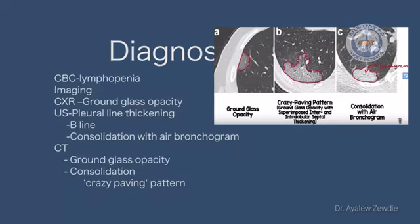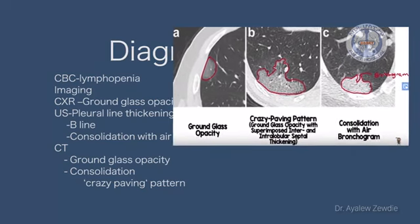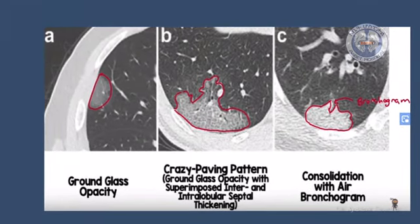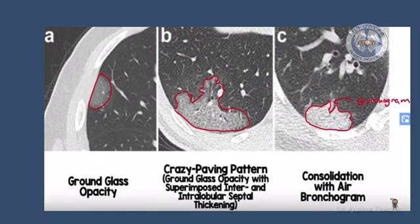CT is currently recommended for patients with COVID-19. Ground-glass opacity, consolidation, and a special characteristic known as the crazy paving pattern can be detected. As you see here on CT scan, this is a ground-glass opacity, and here also a ground-glass opacity with air bronchogram. The crazy paving pattern has ground-glass opacity with interlobular and intralobular thickening. On ultrasound, you will see pleural thickening, multiple B-lines, and consolidation with air bronchogram.